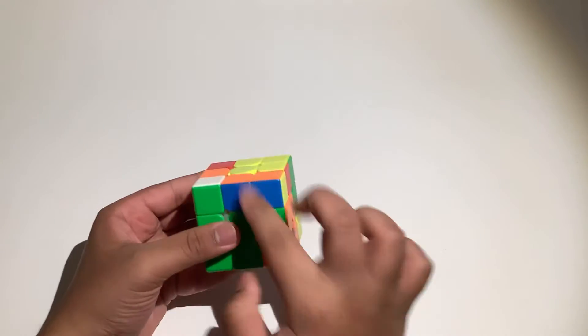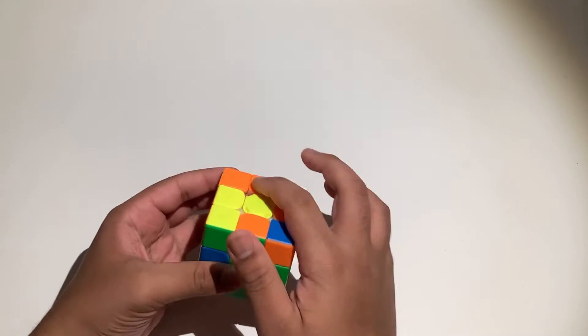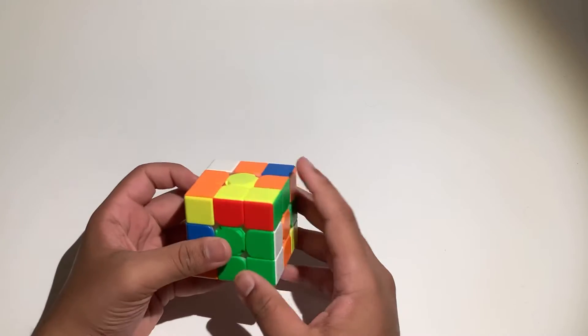So what you should do is, again the case, you should put the edge in the back and now if you do F', as you can see we've paired it up into our three mover into the back.